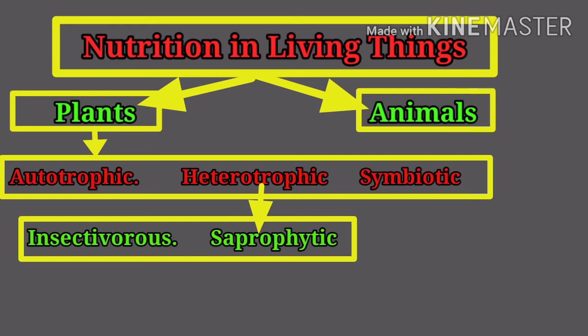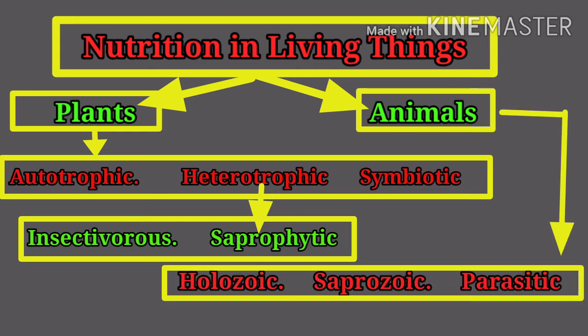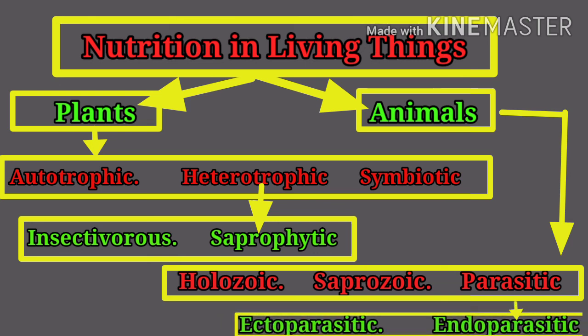Now, let's see nutrition in animals. It is divided into three modes: holozoic, saprozoic, and parasitic. Holozoic nutrition is seen in microorganisms like amoeba and paramecium. Saprozoic nutrition is seen in insects and unicellular animals which feed on dead bodies of other animals. Parasitic nutrition is where some animals depend on other animals for food. It is subdivided into two modes: ectoparasitic nutrition, which occurs on the surface of the body of another animal, and endoparasitic nutrition, which occurs inside the body of another animal.